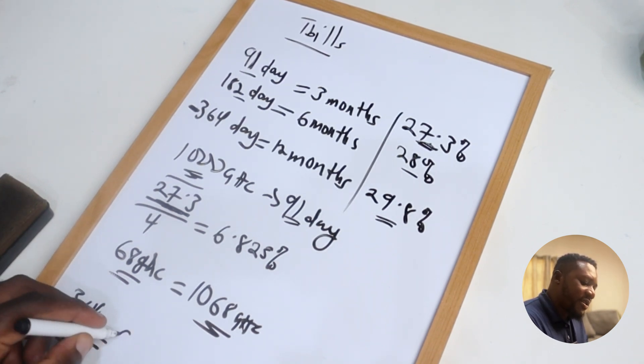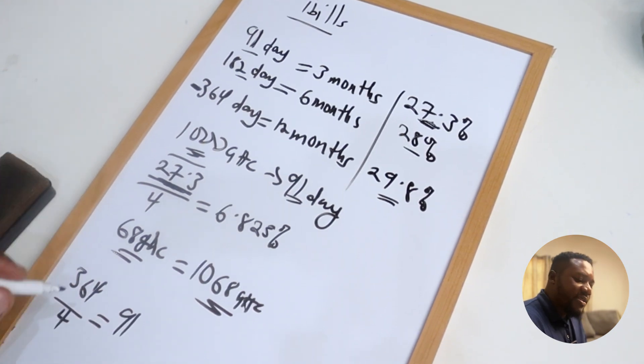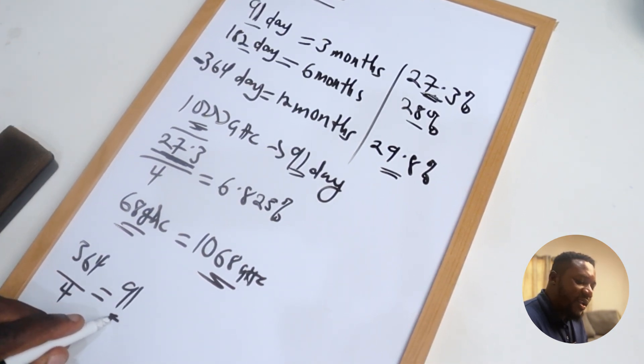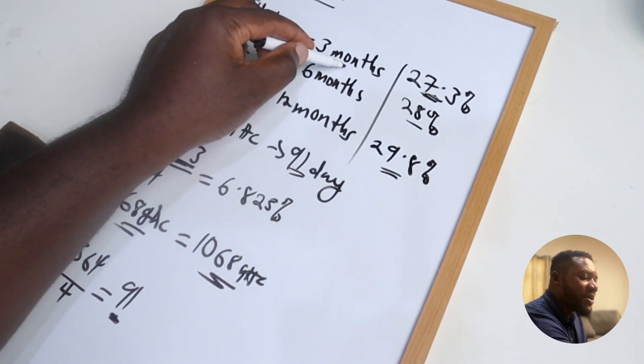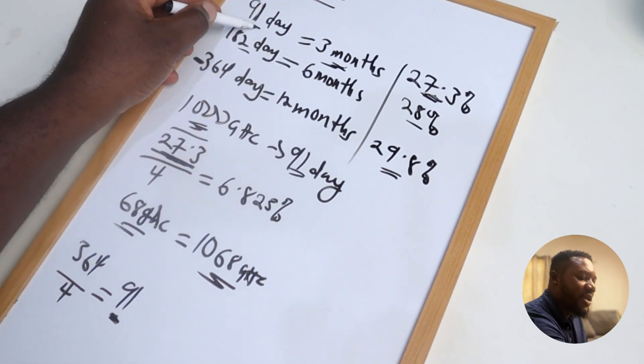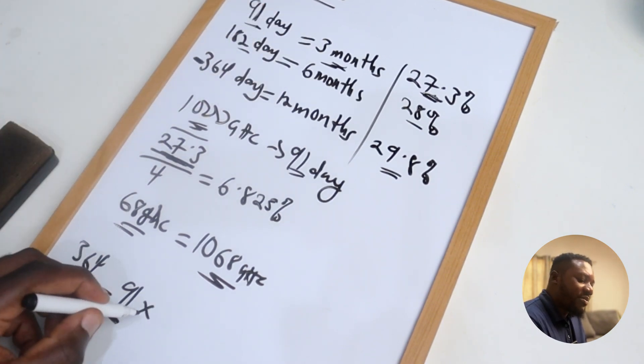So this basically tells you that if you multiply 91 by 4, you're going to get 364. So if you do this three months investment, which is the 91 day bill, four times, you are going to get the final rate of 27.3.